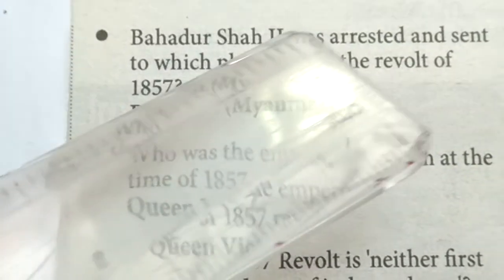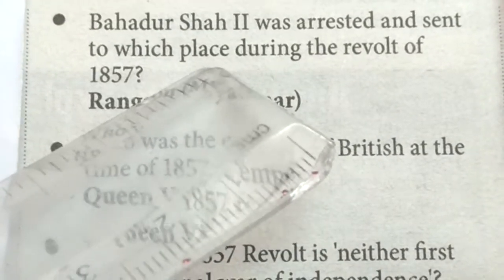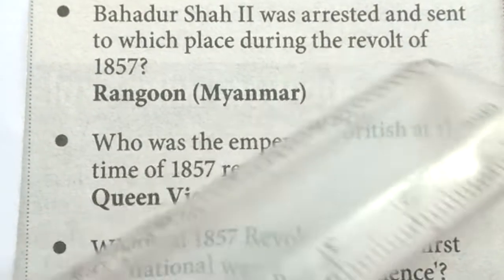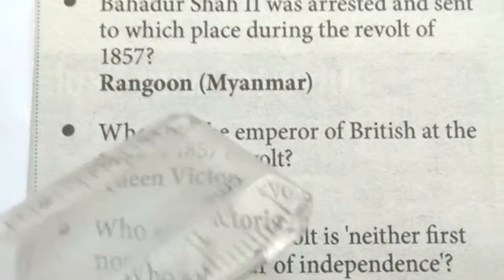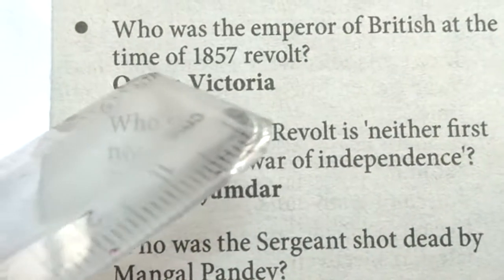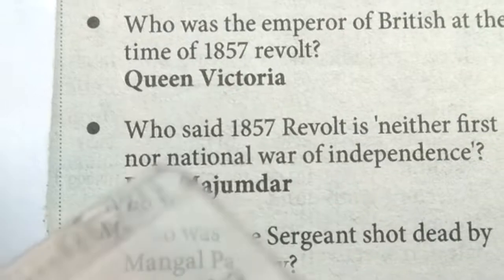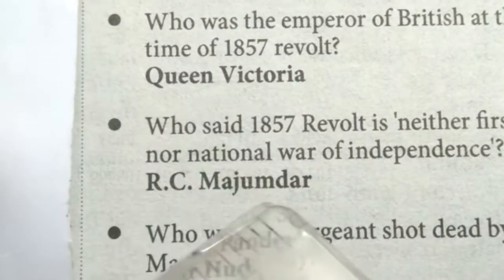Bahadur Shah II was arrested and sent to Rangoon, Myanmar, during the Revolt of 1857. Who was the Emperor — or rather monarch — of Britain at the time of the 1857 Revolt? Queen Victoria.